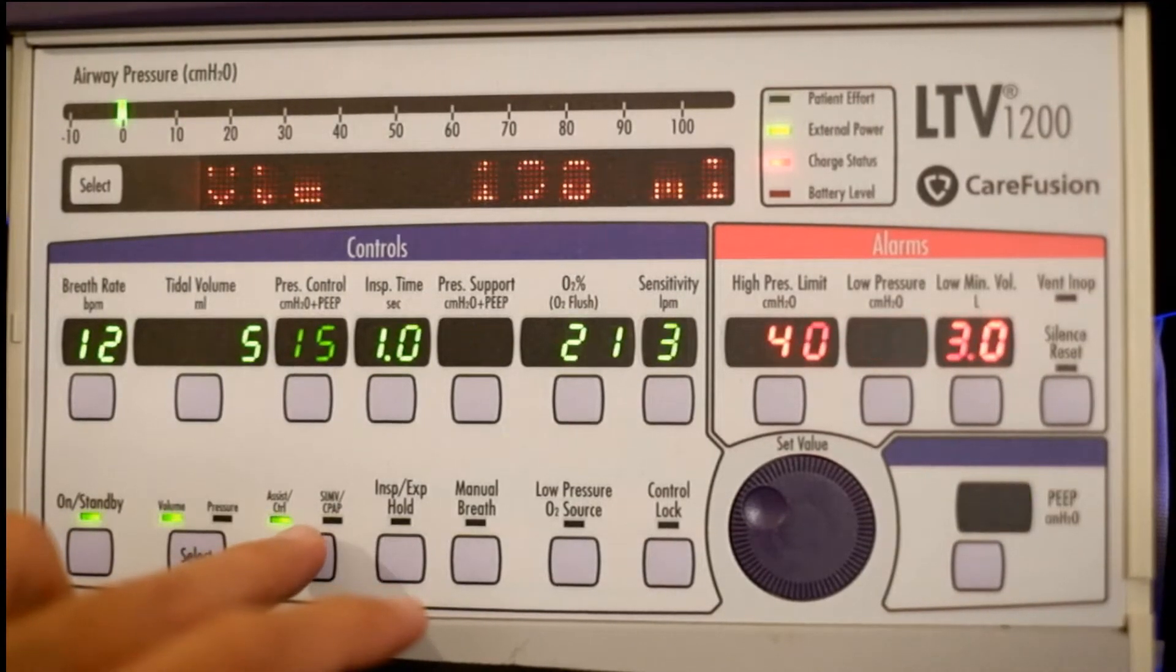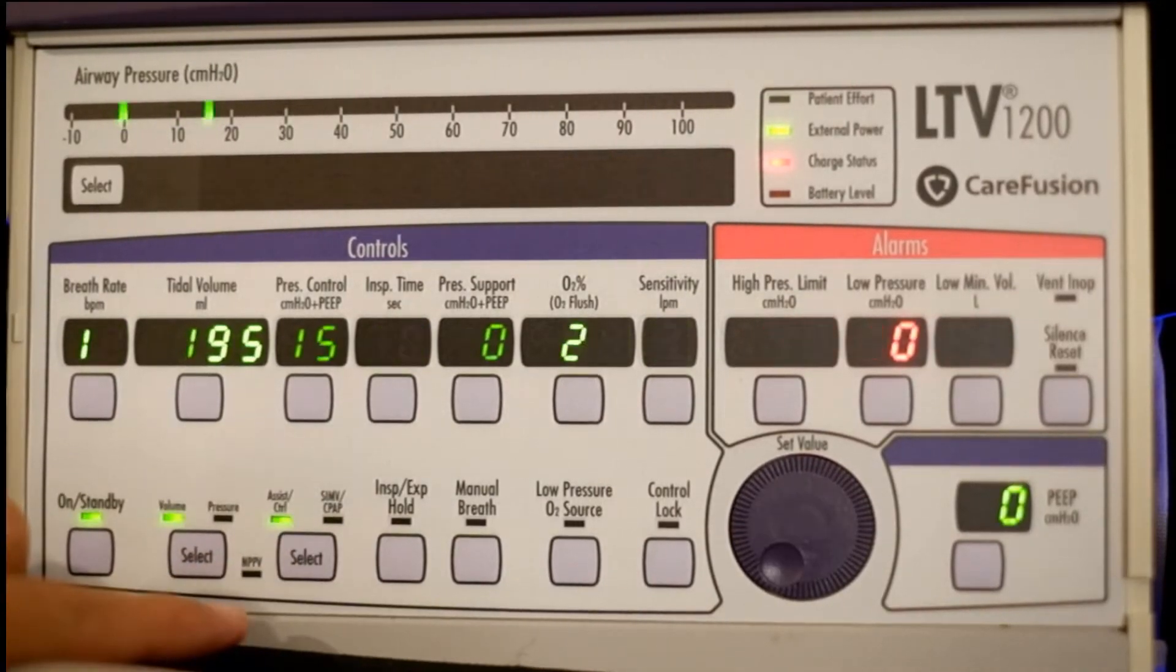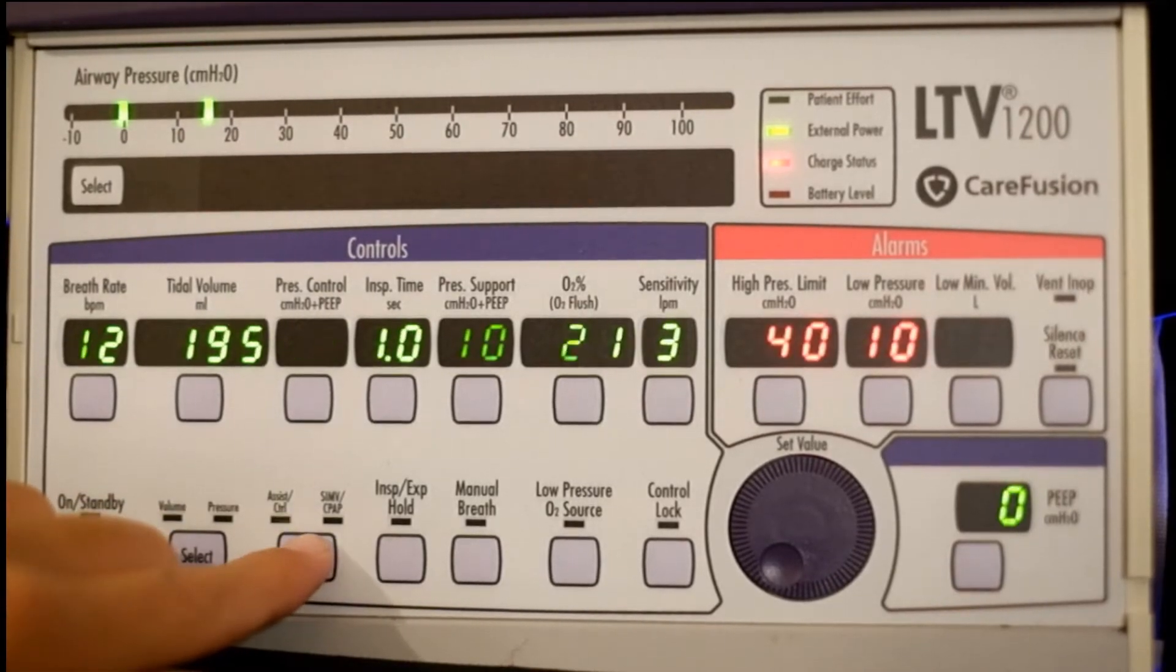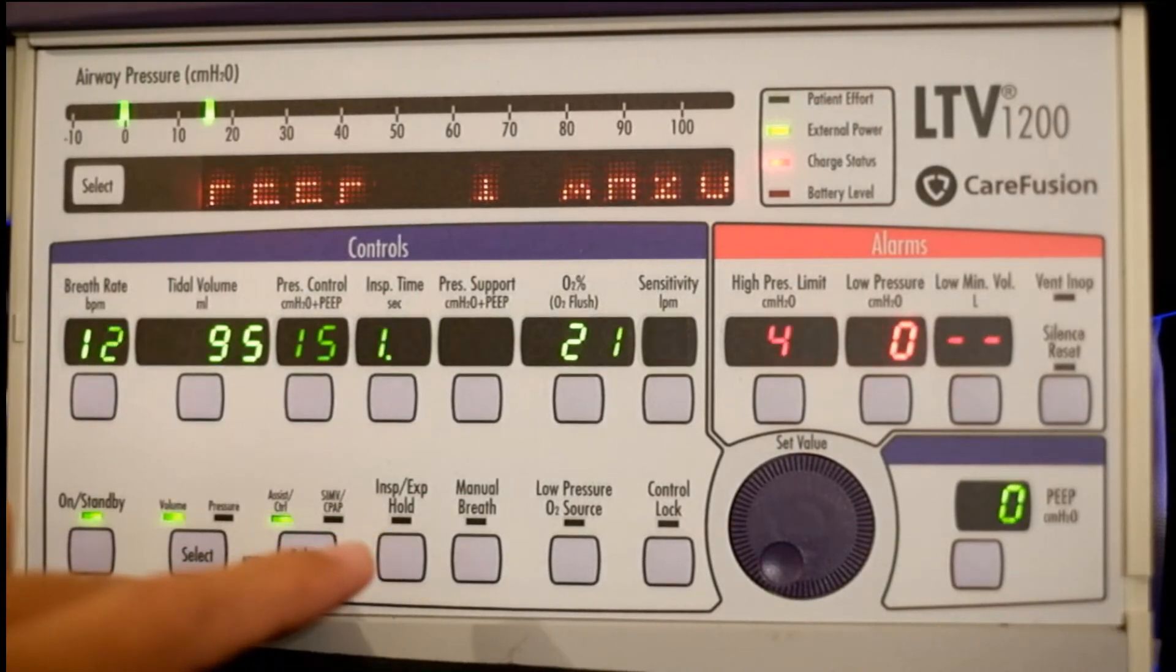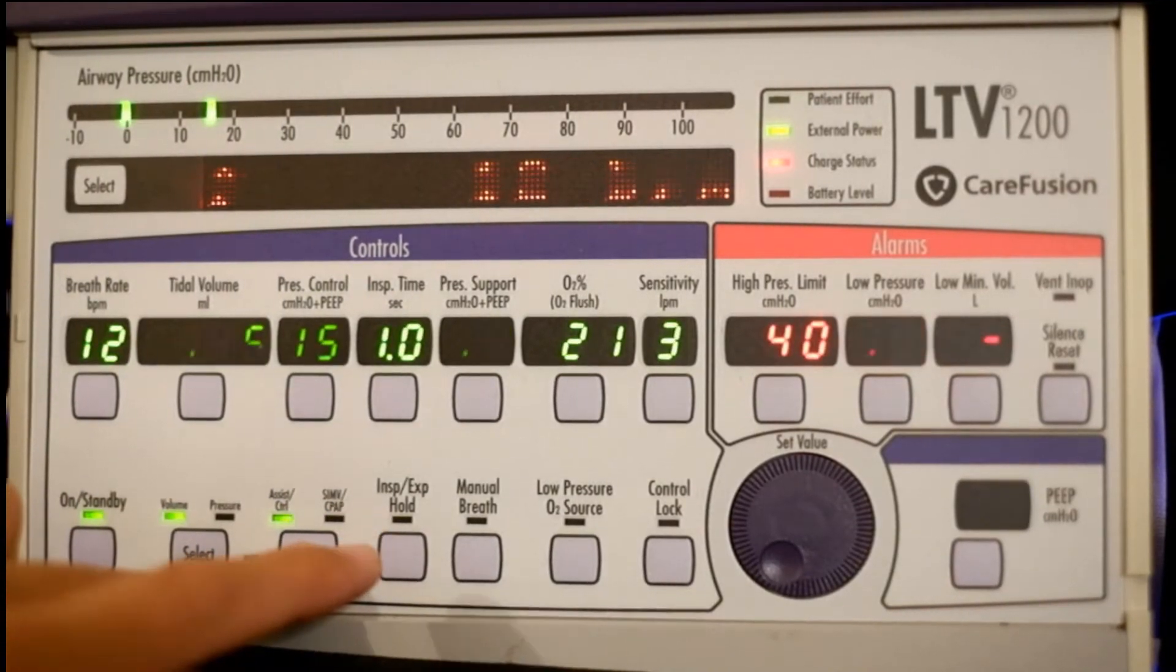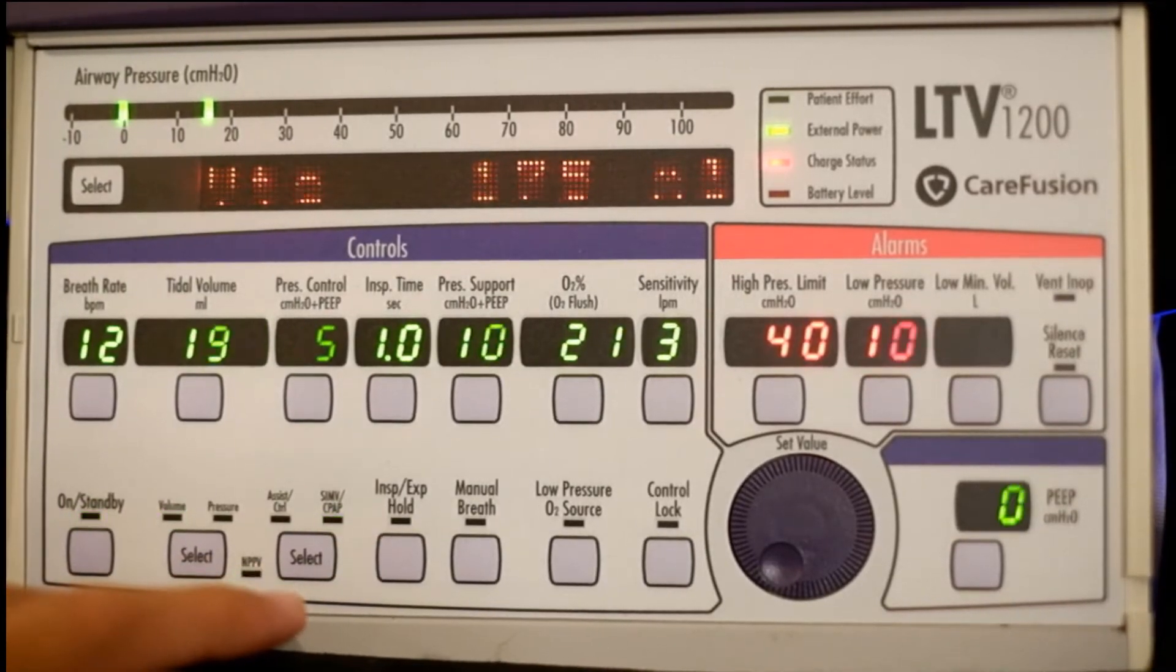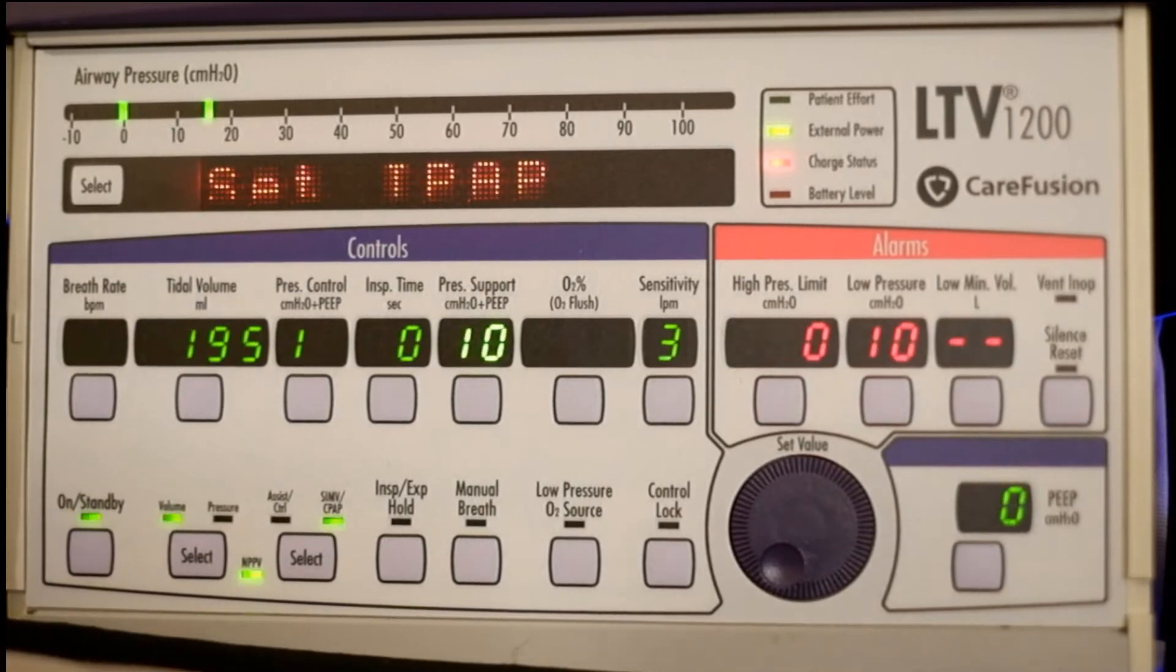Assist control, SIMV CPAP, and NPPV - non-invasive positive pressure ventilation - is what we want. We're going to have to press the button four times. So we hit it once, it's blinking on SIMV. Hit it again, that's two. Hit it again, it's now blinking on NPPV. Hit it again, and now we're on BiPAP.